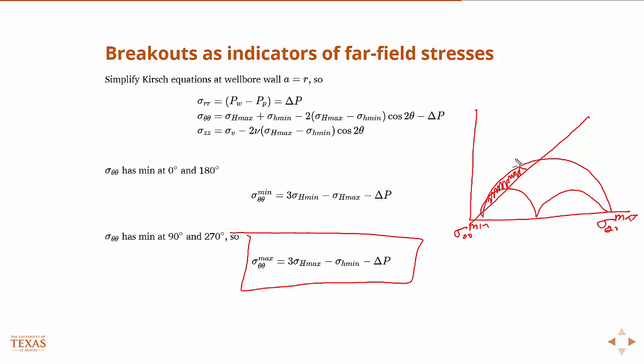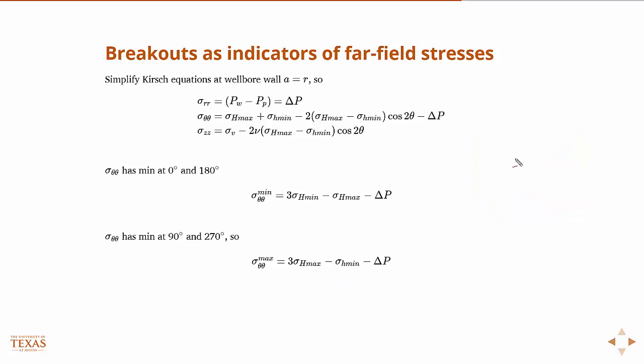So if we subtract those two, then we get this. And so we see that the difference in the minimum and maximum hoop stress is basically proportional to the difference in principal stresses. It's just basically a factor of four difference between the maximum and minimum hoop stress and the maximum and minimum principal stress differences. So where you see breakouts are clear indicators of the directions of the maximum and minimum horizontal stress.